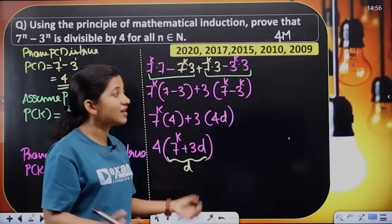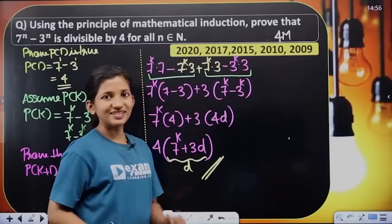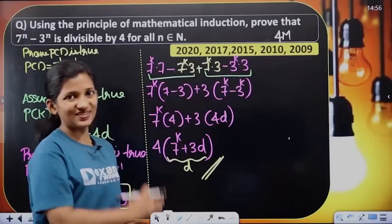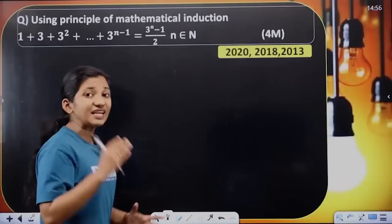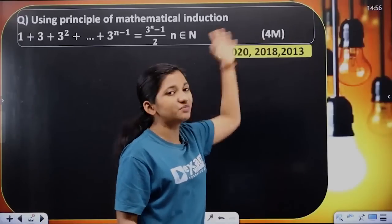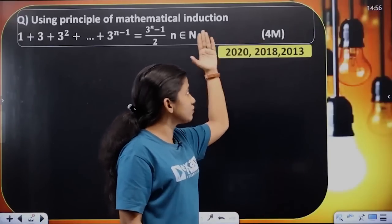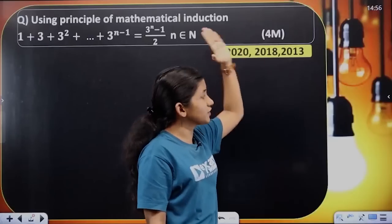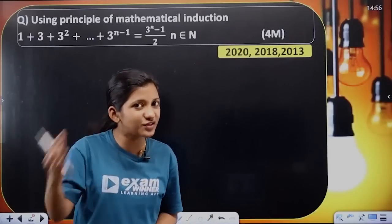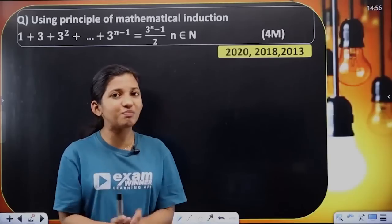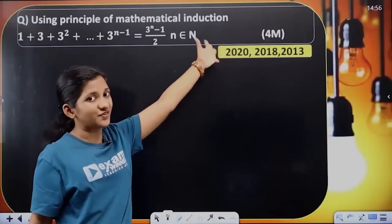Then they have divisible by 4. So we have solved the question. Then the second question — this is of course a 4-mark question that appeared in the previous year, in 2018 and 2013.